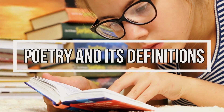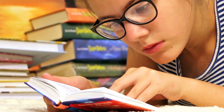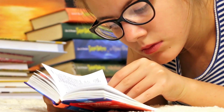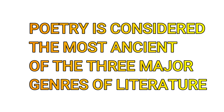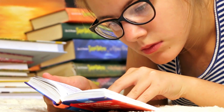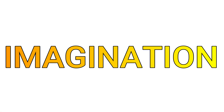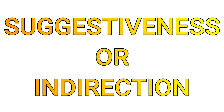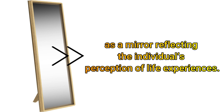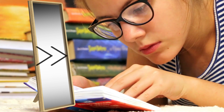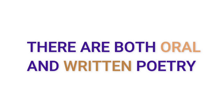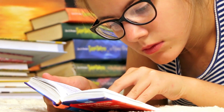Poetry and its definitions. In this unit you will learn the basic considerations in the study of poetry. Poetry, as we have indicated in the foregoing unit, is considered the most ancient of the three major genres of literature. Accordingly, we have to begin by saying it is a form of literary expression with all the defining qualities of literature such as imagination, creativity, suggestiveness or indirection, as a mirror reflecting the individual perception of life experiences. Generally speaking, these qualities apply to both oral and written forms of poetry, but the medium of expression and transmission are markedly different.